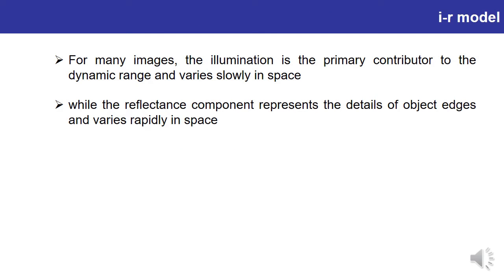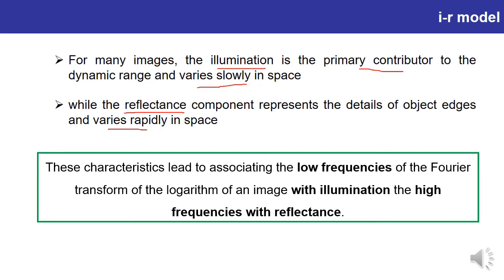For many images, illumination is the primary contributor to the dynamic range and it varies slowly. If you observe the behavior of the reflectance component, it varies rapidly. These characteristics lead to the association of low frequencies of the Fourier transform of the logarithm of an image with illumination, and high frequencies with reflectance. These properties have been utilized while defining the process of homomorphic filtering.